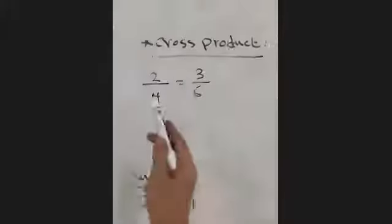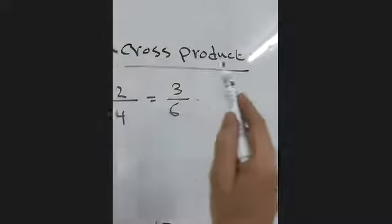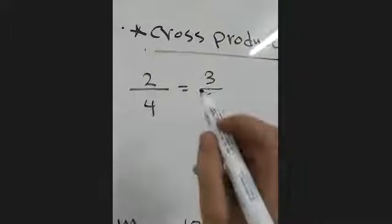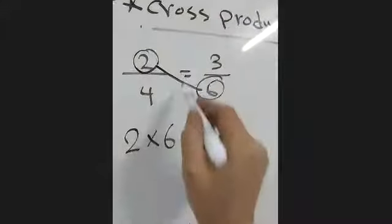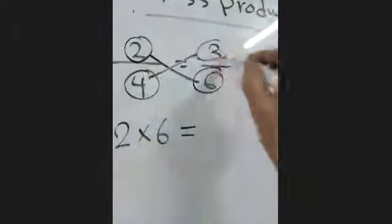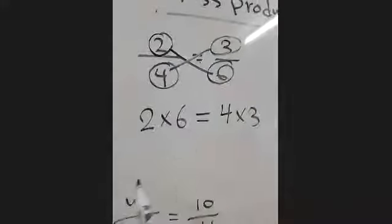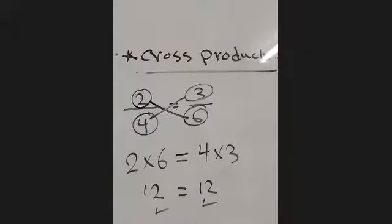Now if you have two fractions equal to each other — we have a fraction, fraction, and equal between them — we can make something we call cross product. To do the cross product, we start with the numerator here, multiply with the six, equal, put it down. Now the denominator: multiply with the three here — cross, four multiply three. Because we have equal, these two sides should be equal: two times six is twelve, equal four by three is twelve also. This we call cross product.